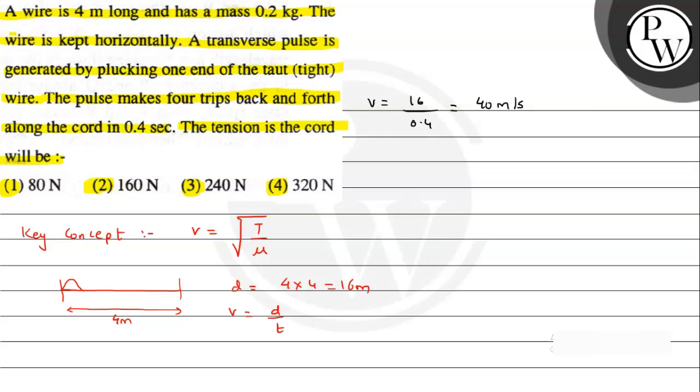Now we have the value of velocity. Using v = √(T/μ), if we square both sides, v²μ equals T. Therefore, v² means 40 squared which is 1600, times μ (mass per unit length, so 0.2 divided by 4) equals tension.